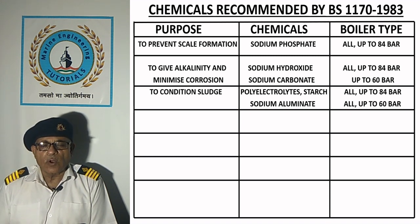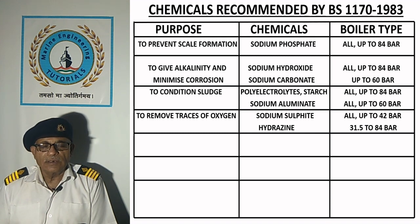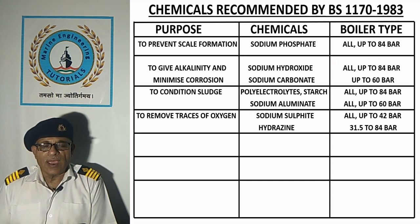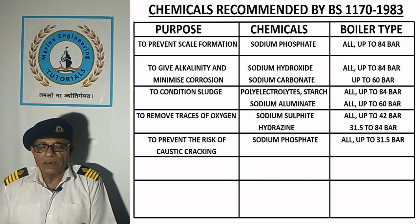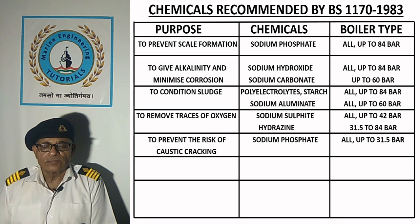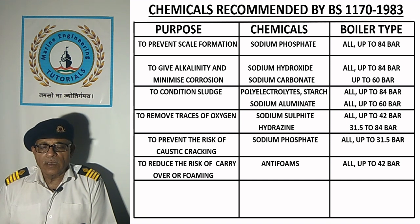Sodium aluminate is used for boilers up to 60 bar for sludge conditioning. To remove traces of oxygen, sodium sulfite is used for boilers up to 42 bar, and hydrazine for boilers from 31.5 to 84 bar — but mostly on motor ships where we have low-pressure boilers, we also use hydrazine. To prevent the risk of caustic cracking, sodium sulfate is used for all boilers up to 31.5 bar. To reduce the risk of carryover or foaming, antifoams are used for all boilers up to 42 bar.